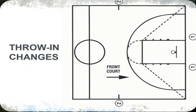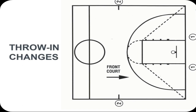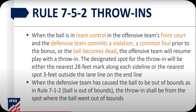It's Thanksgiving — grab your food, get a drink, sit down and watch. Let's go. All right, let's look at our throw-in changes in the front court. Our designated spots are the 28-foot mark along the sideline and three feet outside the lane line on the inline. Rule 7-5-2, throw-ins: when the ball is in team control in the offensive team's front court and the defensive team commits a violation, a common foul prior to the bonus, or the ball becomes dead, the offensive team will resume play with a throw-in. The designated spot for the throw-in will be nearest to the 28-foot mark along each sideline or the nearest spot three feet outside the lane line on the inline.